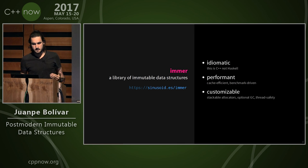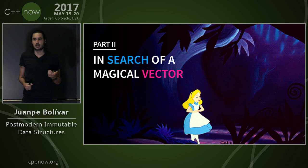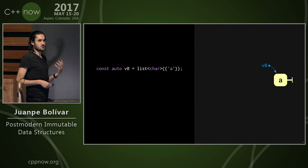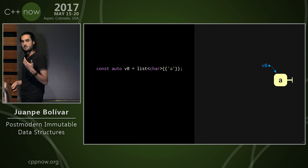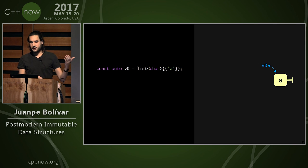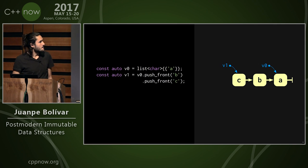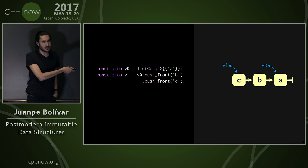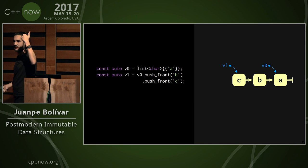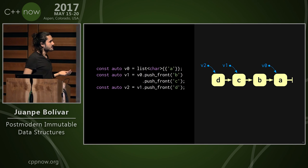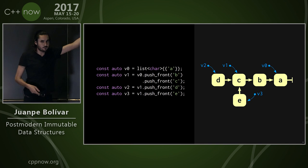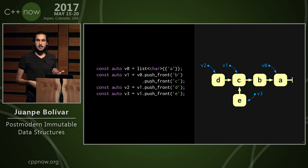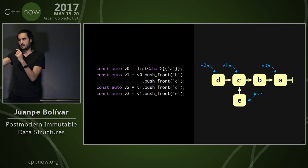This brings us to part two: how does this magical vector type work? First, let's understand structural sharing using the typical example of an immutable list. A list is composed of nodes with a pointer to the next element. I can have a list with element A, push to the front to create a second value, and this second value still references elements from the first. I can do this again, get a third version, and also fork the past to create another branch. All these share a lot of data because the data is sliced into small nodes connected to each other.